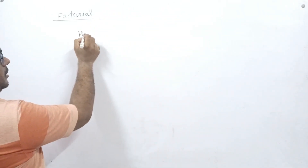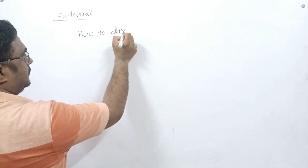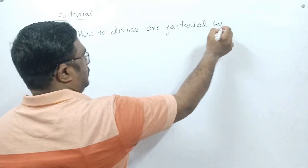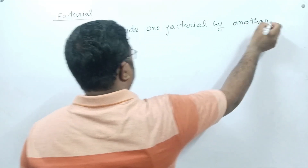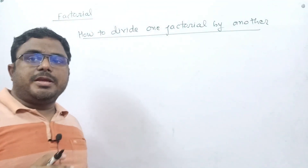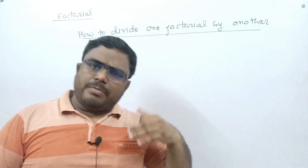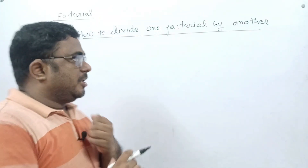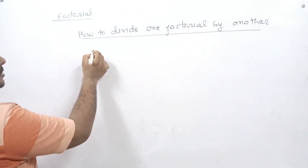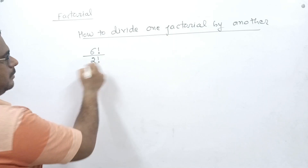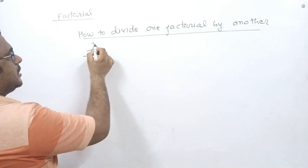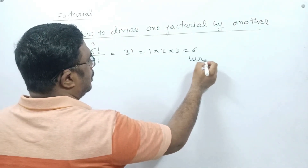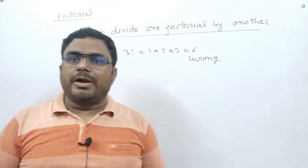Now, the next important topic is how to divide one factorial by another. It is a very important concept used in many questions and proofs. Suppose I give you 6 factorial upon 2 factorial. If you simply cancel — say 2, 3 gives 6 so 3!, then 1×2×3 = 6 — that is the wrong answer. In factorial, we cannot divide like that, so this process has gone wrong.